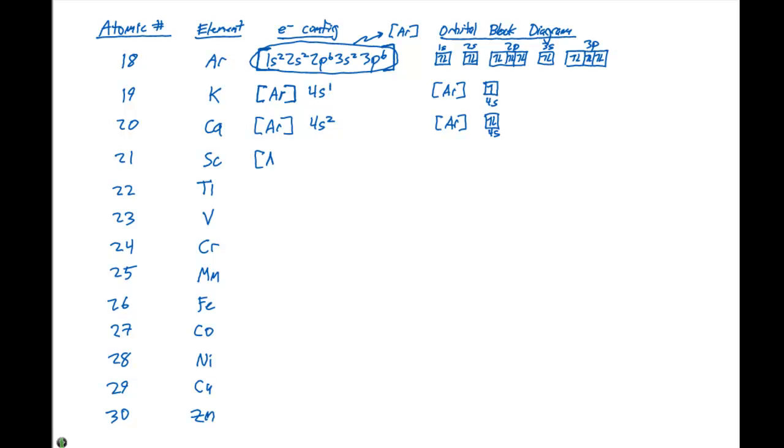For scandium, we have the argon noble gas core, and it's gonna be 4s2, 3d1. So we can give our argon core here, show our two 4s electrons. And then, the next in line is the 3d. And it's gonna have one electron in that 3d orbital.